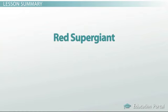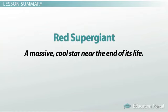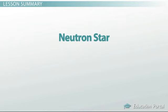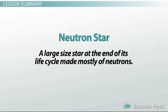Red supergiant, a massive, cool star near the end of its life. Neutron star, a large-sized star at the end of its life cycle made mostly of neutrons.